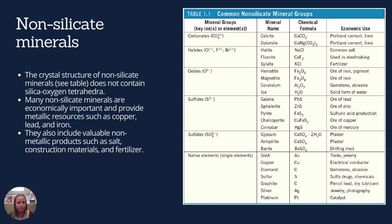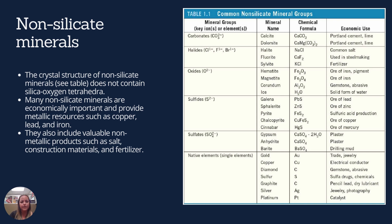The non-silicate minerals have vastly different chemical formulas. They are subdivided based on the majority of elements present in them. The oxides contain a lot of oxygen, the sulfides contain a lot of sulfur, and the native elements are all one single element. They do not contain the silica-oxygen tetrahedra.